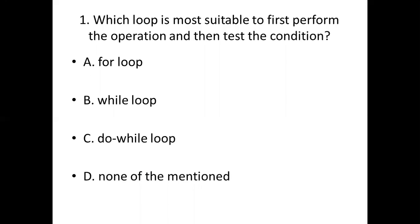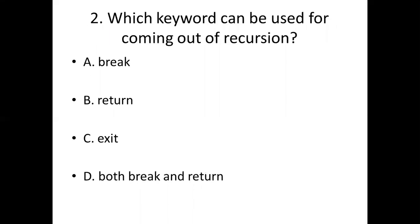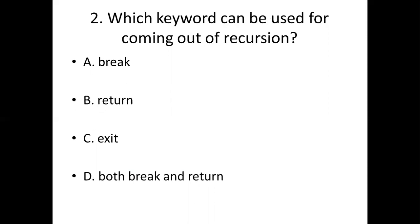Second bit. Which keyword can be used for coming out of recursion? Option A: break. Option B: return. Option C: exit. Option D: both break and return. Answer: Option B, return.